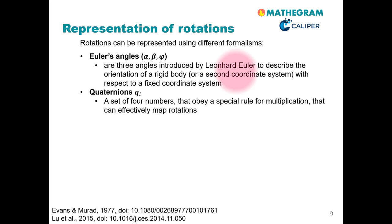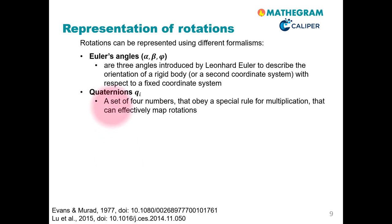In contrast to Euler angles, one can define quaternions. These have been introduced by Evans and Murat in the field of molecular dynamics and have been extremely successful also in the field of DEM. Here, a set of four numbers — qi is a vector consisting of four entries — that obey a special rule for multiplication can effectively be used to describe the orientation of a particle in space.